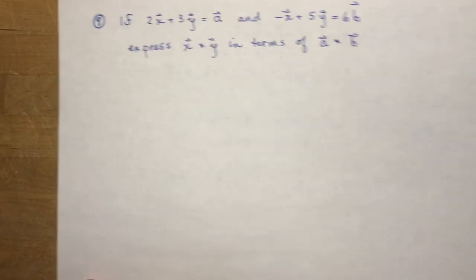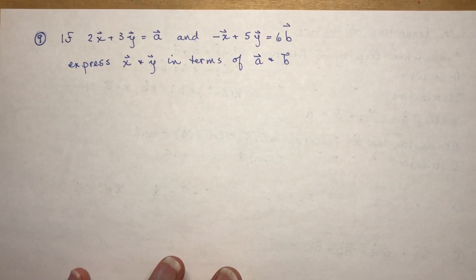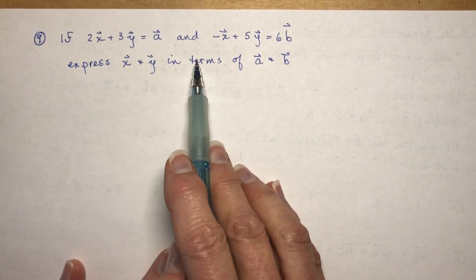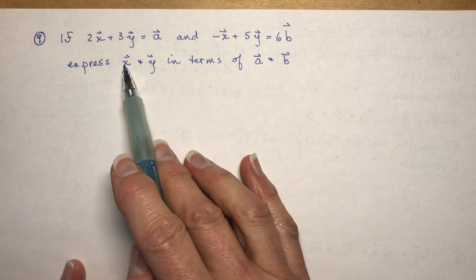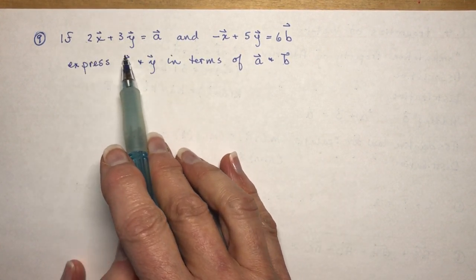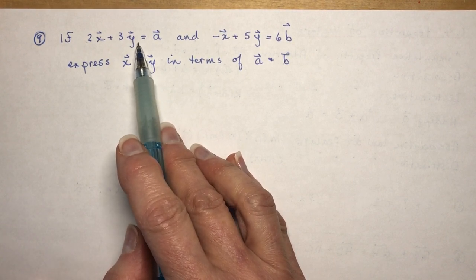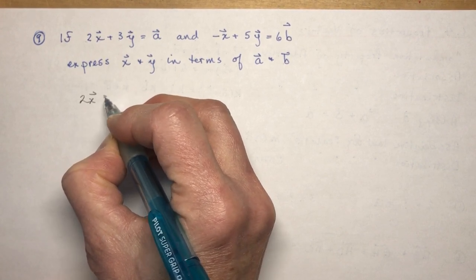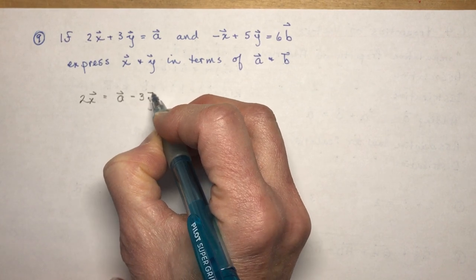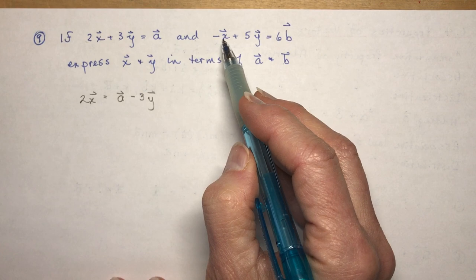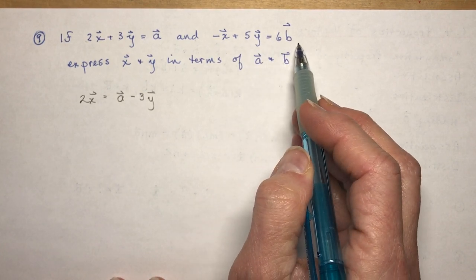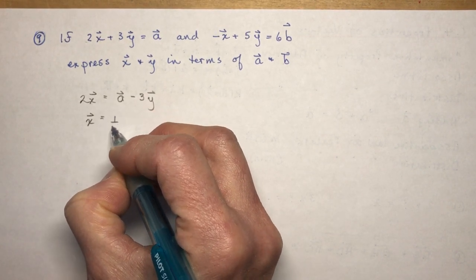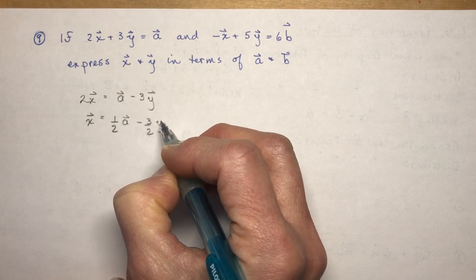Let's look at one other question. If 2x + 3y = a and this is b, express vectors x and y in terms of vectors a and b. If you want x and y in terms of a and b, you have to first write x in terms of a. I'll do it the long way so you can see every step. I do 2x = a - 3y. My intention is to find this in terms of x, plug it in here, then I have y in terms of a and b, then I can plug it back in and find x. So vector x = 1/2 vector a minus 3/2 vector y.